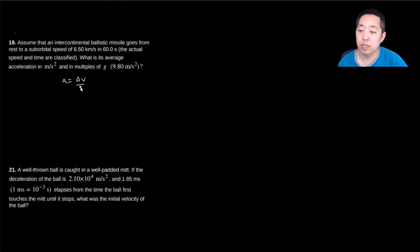change in velocity over time. So we're going to do 6.5 kilometers per second divided by 60 seconds. Now, I want to multiply this by—because I want to convert this to meters, so this is really,